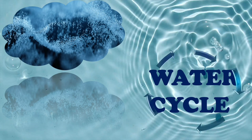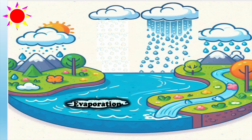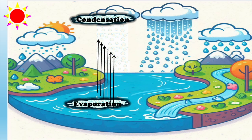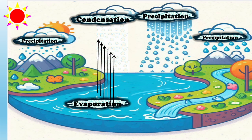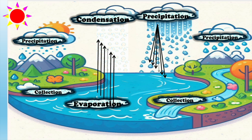The water cycle is the real hero. When the sun heats up water from rivers and lakes, it turns into vapor and rises up into the sky — that is evaporation. The water vapor becomes cool and forms tiny droplets to make clouds — that is condensation. Eventually the water is released back to earth as rain — that is precipitation. After it rains, some water soaks into the ground to help plants grow, while some flows back into rivers and lakes — that is collection.